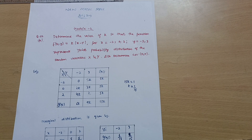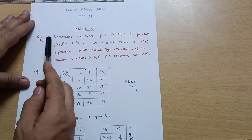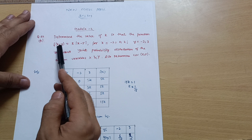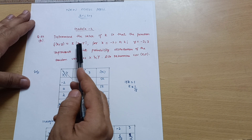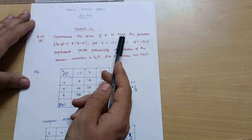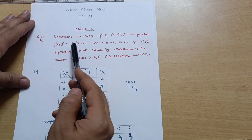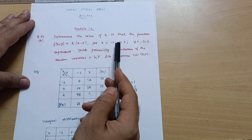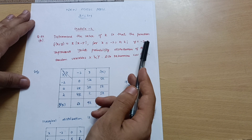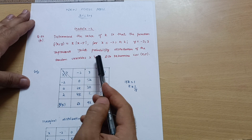Hello everyone and welcome back. Today I will be explaining problem question number 2b of Model 2: determine the value of k so that the function f(x, y) = k * |x - y| represents the joint probability distribution of random variables x and y, where x = {-2, 0, 2} and y = {-2, 3}.